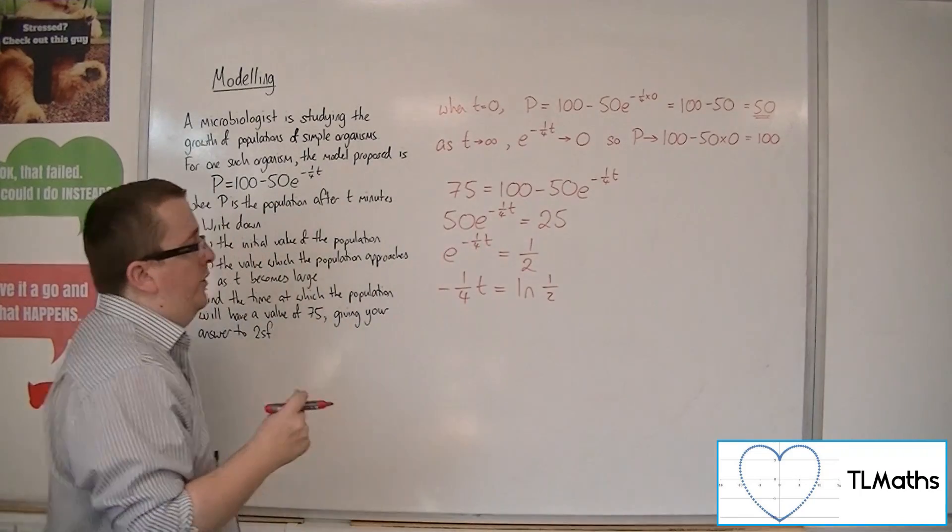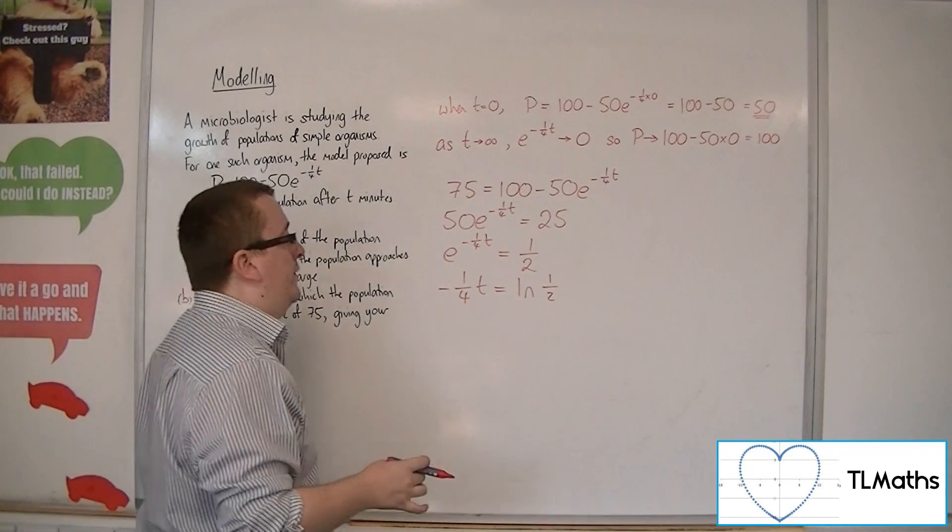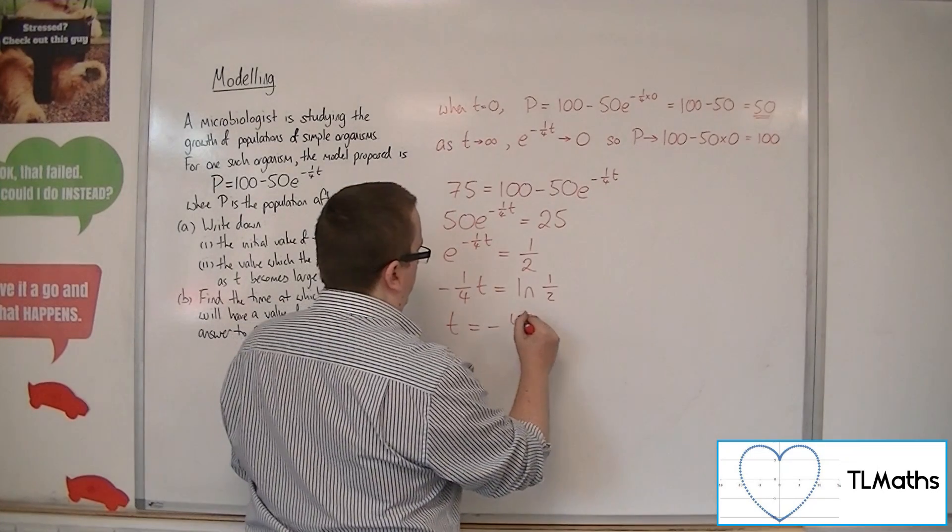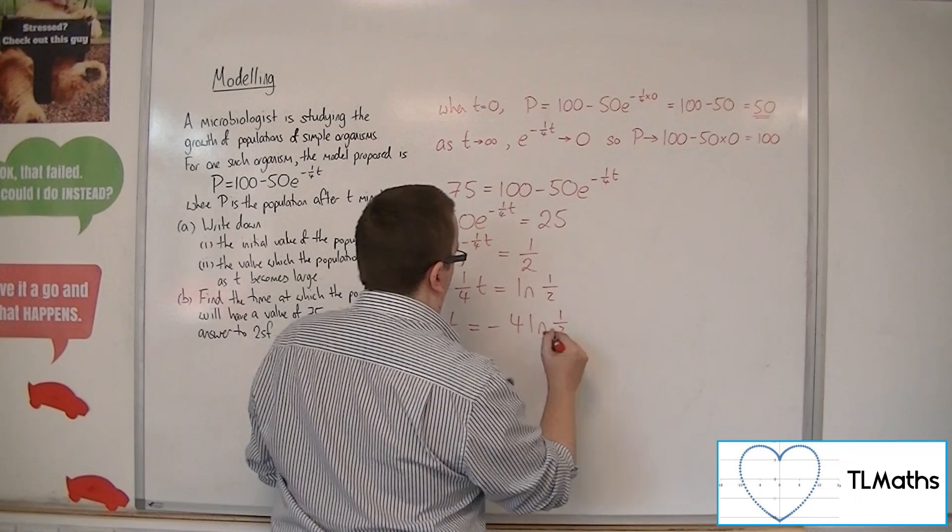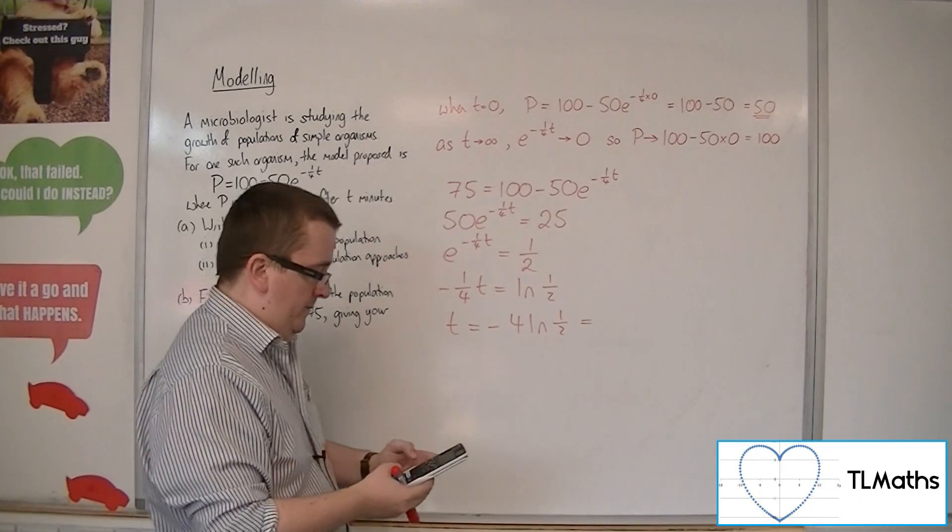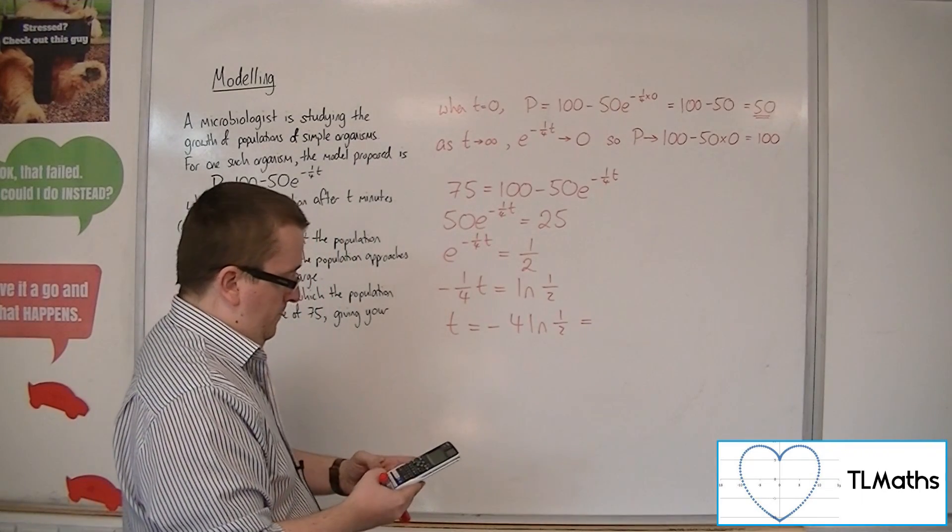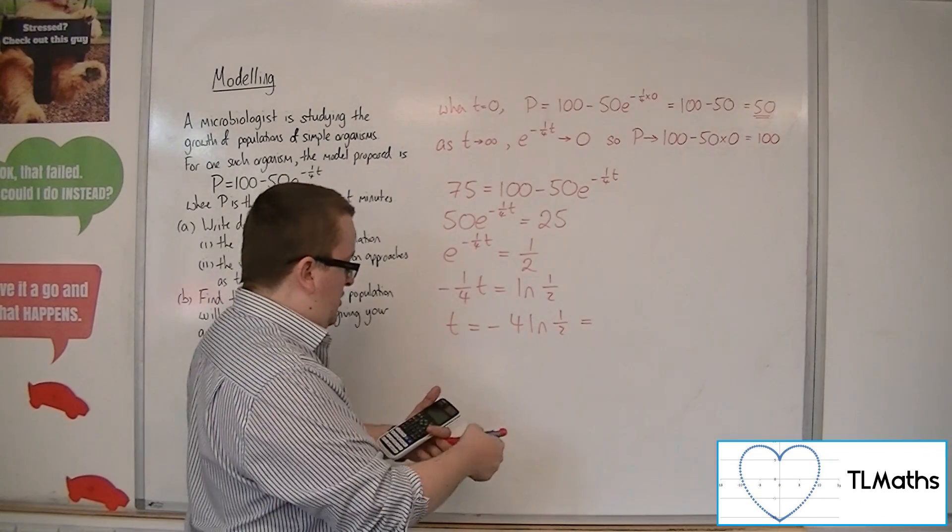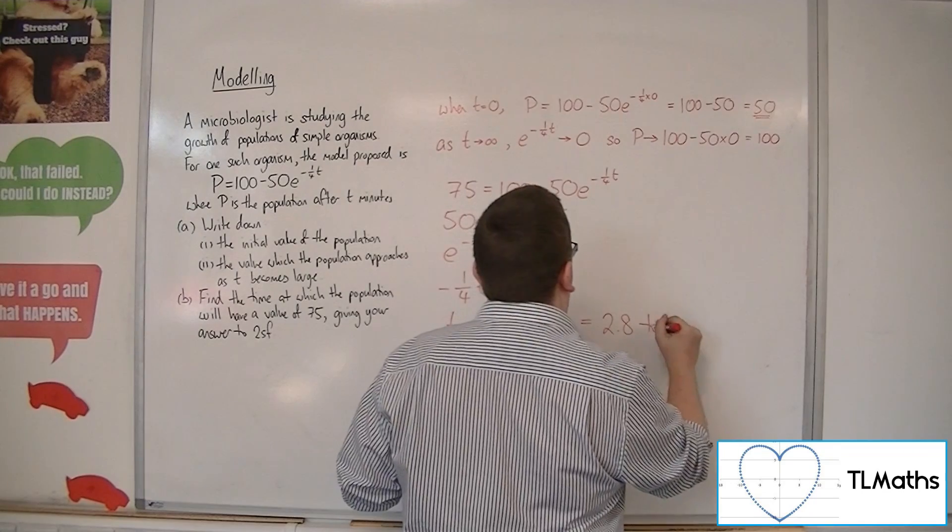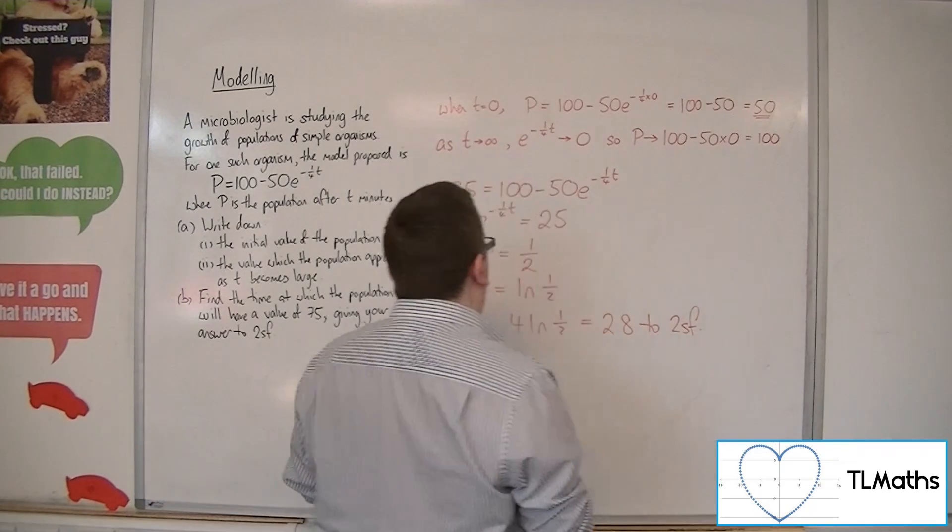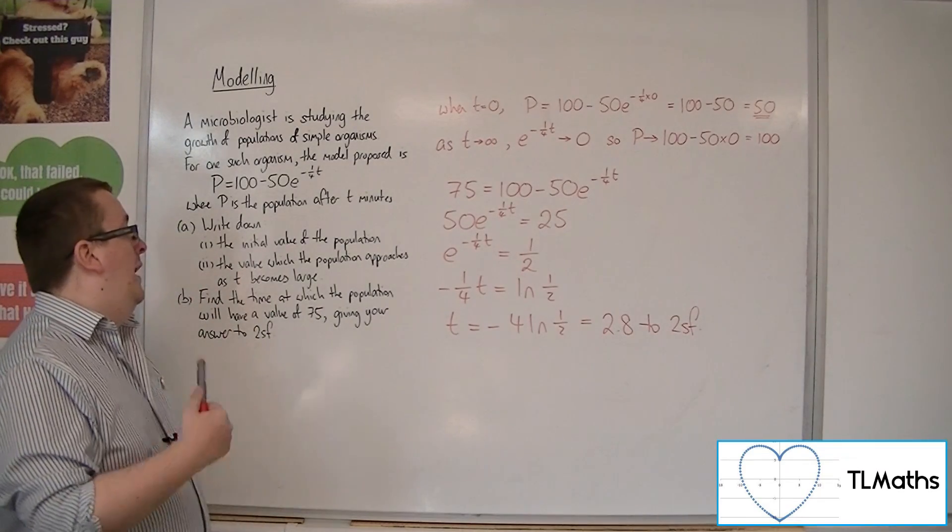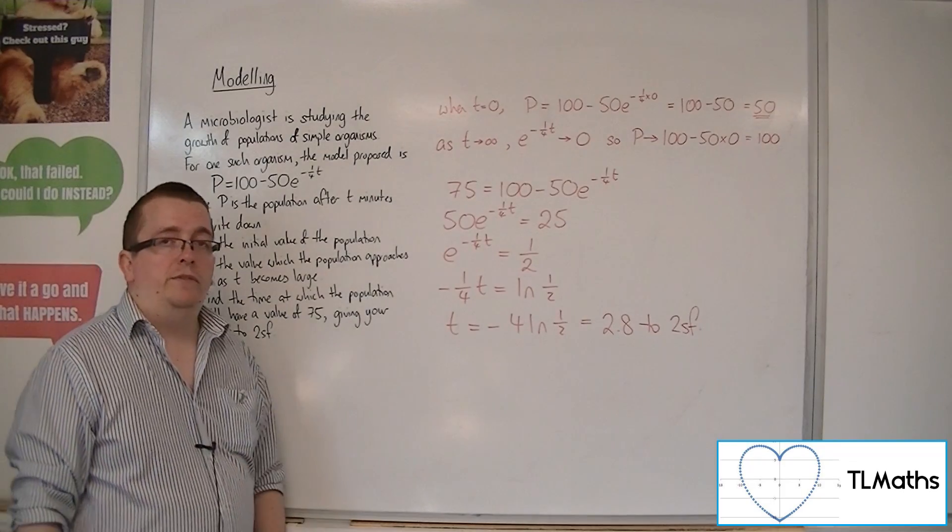So natural logarithm to knock out the e, so you've got ln of a half on the right-hand side, and then multiply both sides by minus 4. So we have minus 4 times ln of a half, which is 2.77 or 2.8 to 2 significant figures as required. So that would be 2.8 minutes. That's how long it would take to get a population of 75.